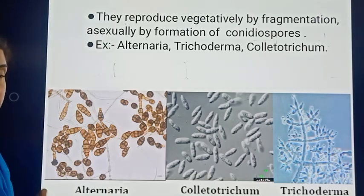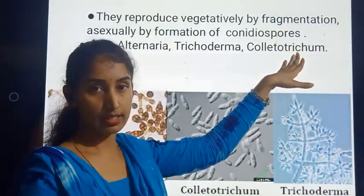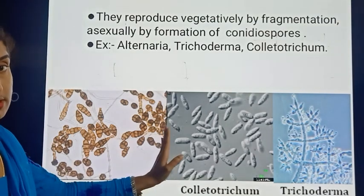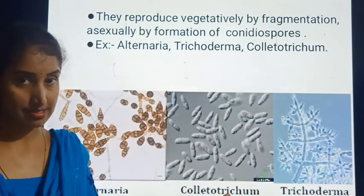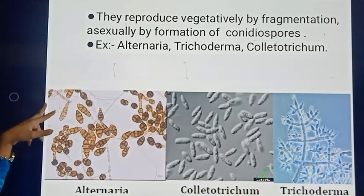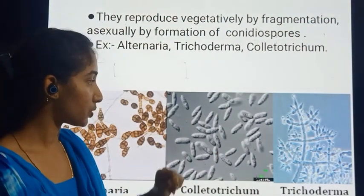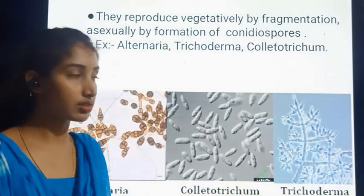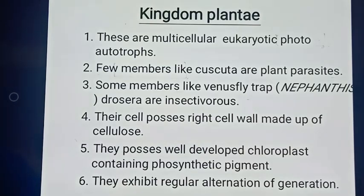Examples of Deuteromycetes include Alternaria, Trichoderma, which is a parasitic fungus, and Colletotrichum. These organisms have highly branched mycelium with septa present, though in some fungi septa may be absent. Trichoderma can cause many skin disorders and infections in humans.